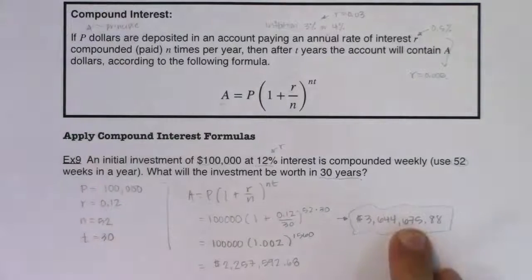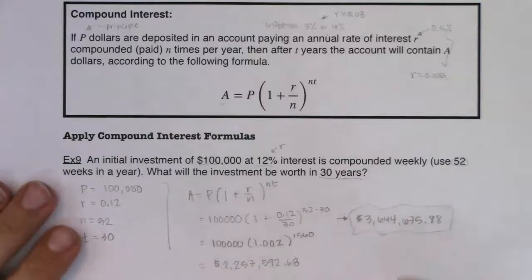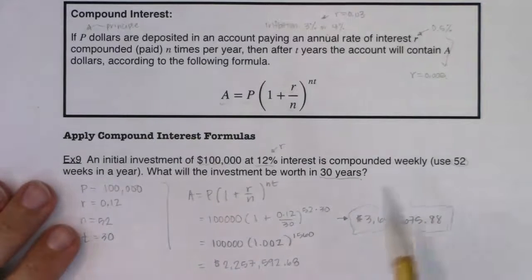So we've got $3,644,675.88. And I would much sooner have this much money as opposed to that much money. And this is the correct answer because I don't have a decimal round off error.